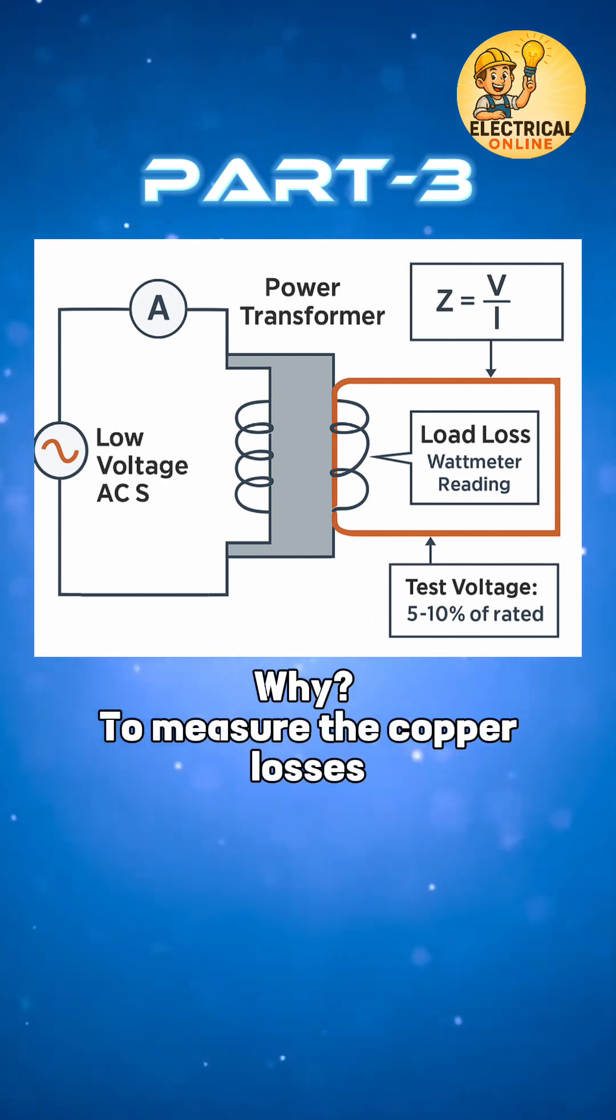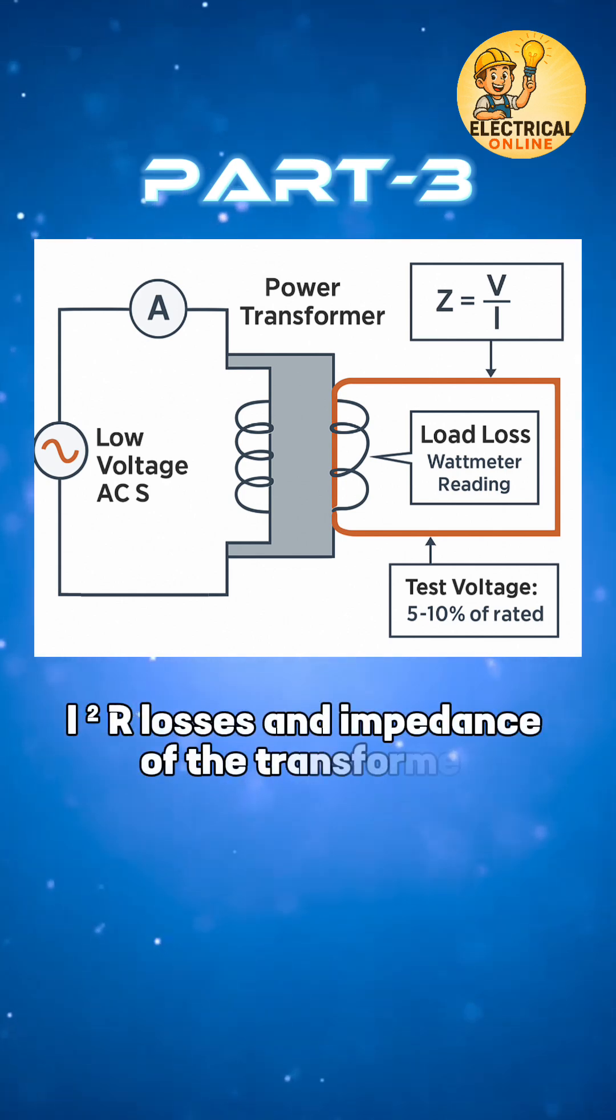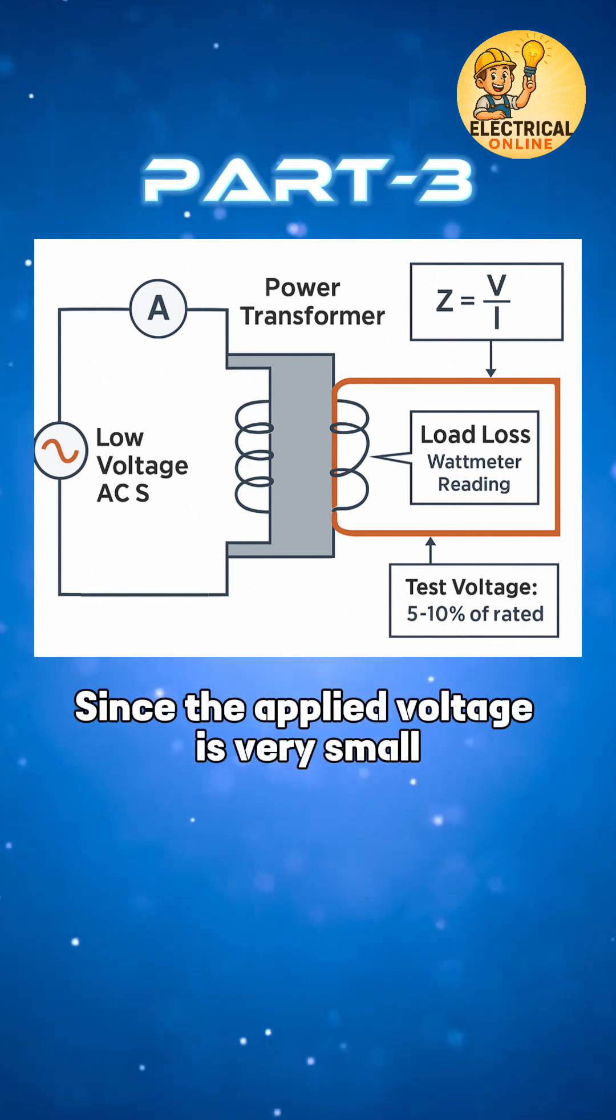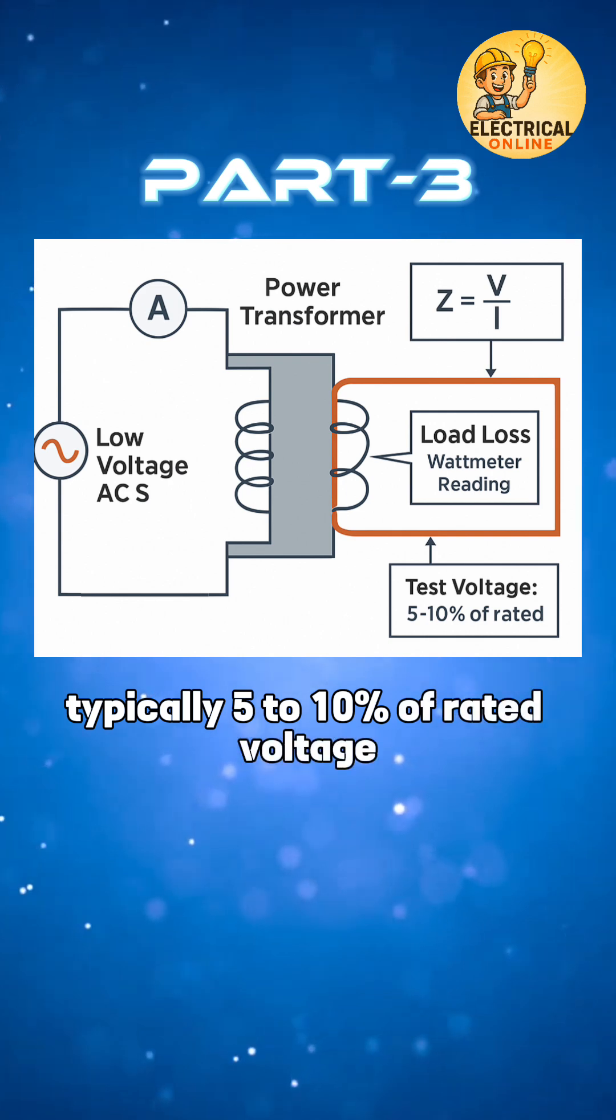Why? To measure the copper losses, I squared R losses, and impedance of the transformer, without the core playing a big role, since the applied voltage is very small, typically 5 to 10% of rated voltage.